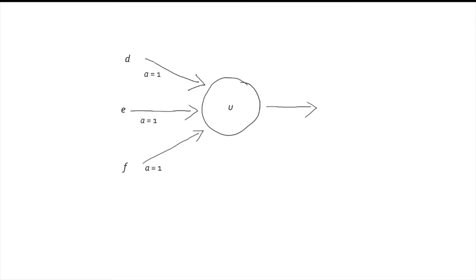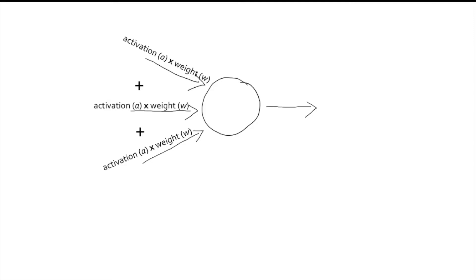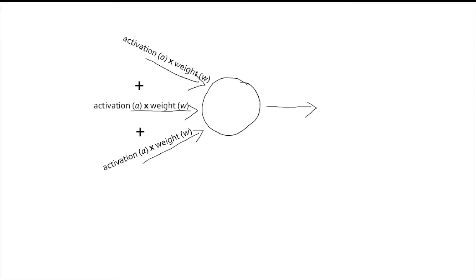For instance, suppose that each of the input units, whose bodies are not shown here but only their connections, has an activation level of 1, but that the connection with unit D has a weight of 2, the connection with E has a weight of 0.25, and the connection with F a weight of minus 1. Then the contribution of D is going to be proportionally bigger than that of E, and in the opposite direction to that of F. Last, all of these products are added, and the result is the total input received by a unit neuron at a given stage.